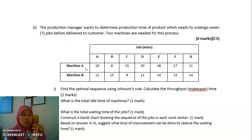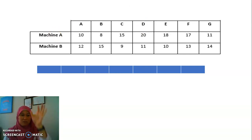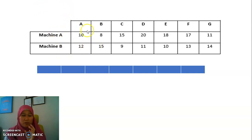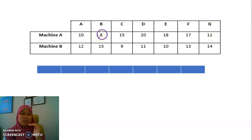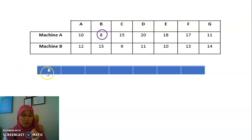First, we need to do the sequence based on Johnson Rules. Since we have two machines here — A and B — if you get easily confused, the best thing is to do it vertically. In this question they do it horizontally, so we need to be very careful. For both machines, we need to find the smallest or minimum time. The minimum is eight, located for Machine A, so we go to the front door.